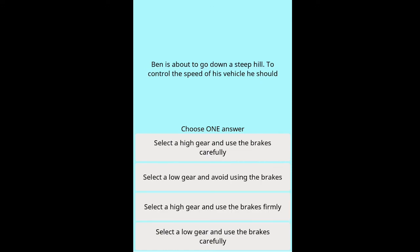Scenario Question 4: Ben is about to go down a steep hill — to control the speed of his vehicle he should: options: select a high gear and use the brakes carefully, select a low gear and avoid using the brakes, select a high gear and use the brakes firmly, select a low gear and use the brakes carefully.